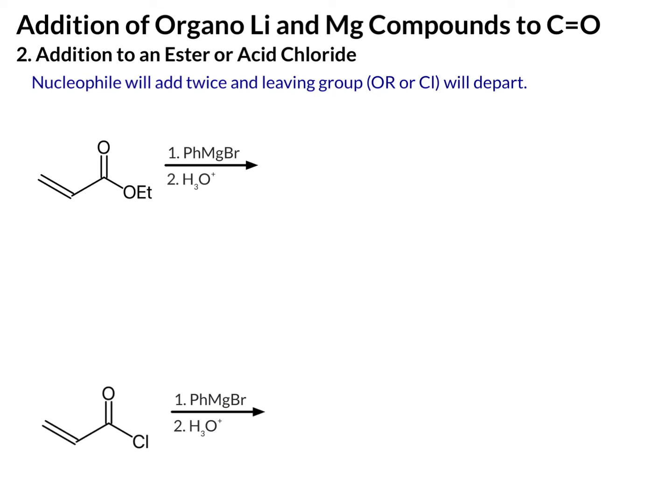If we add an organometallic reagent to an ester or acid chloride, it's going to add twice because you have the leaving group. In the case of the ester, the OR group is the leaving group. In the case of the acid chloride, Cl is the leaving group.